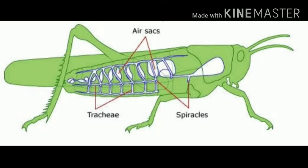The blood of insects does not contain the oxygen carrier called hemoglobin. This is why the insect's blood is not red in color.